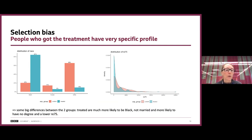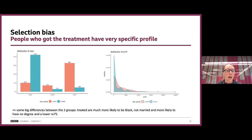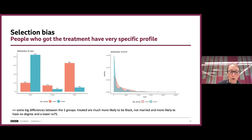If we look at the different covariates, the worst culprit is race. In the control group versus the treated group, the distribution of race is completely different — 84% in the treated group are Black compared to only 20% in the control group. It wasn't just race: there were also differences in marital status, the treated group was more likely to not have a degree, and they had a lower salary to start with anyway.